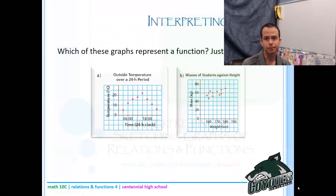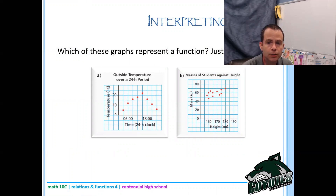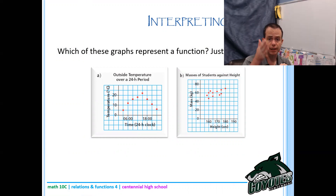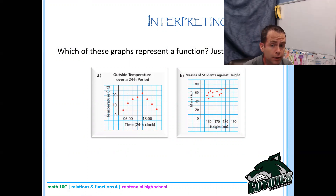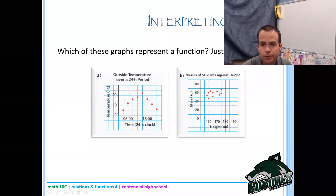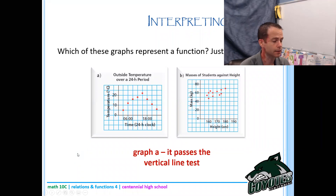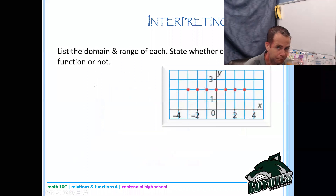First of all, which of these two graphs is a function? When looking at something visually, we want to figure out if it passes the vertical line test - if I draw a vertical line anywhere on the graph, will it only hit the graph once? For the first graph, that works anywhere. But on the second one, a vertical line would hit twice, so it's not a function. Graph A is a function because it passes the vertical line test.